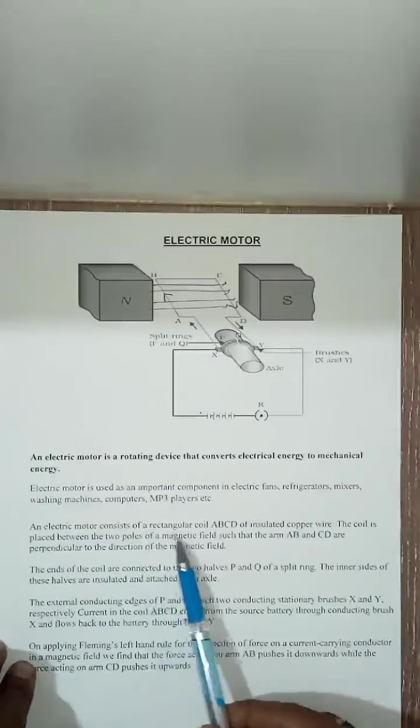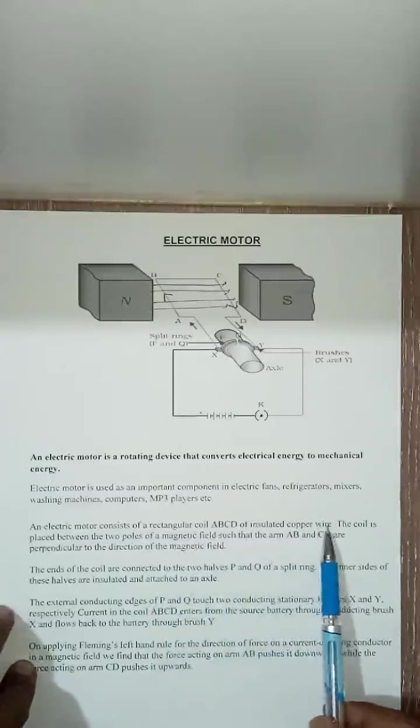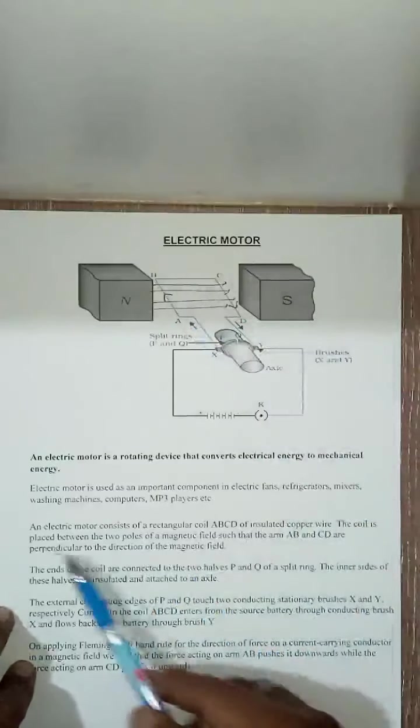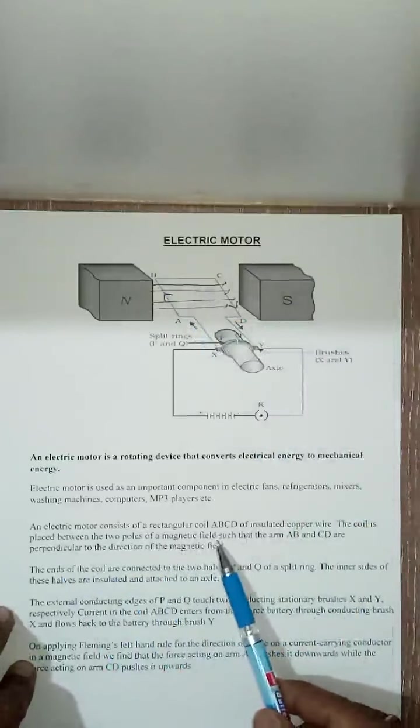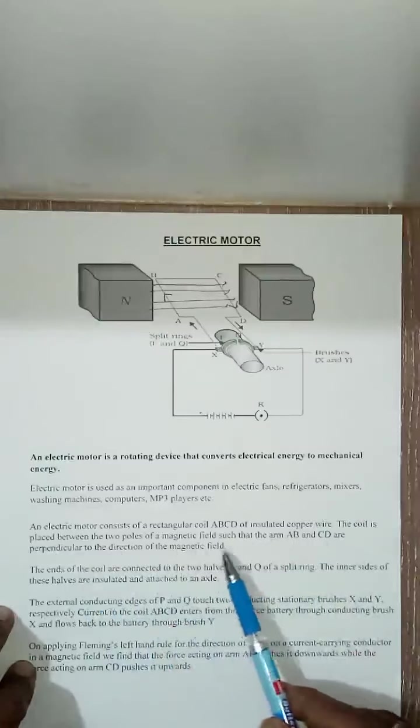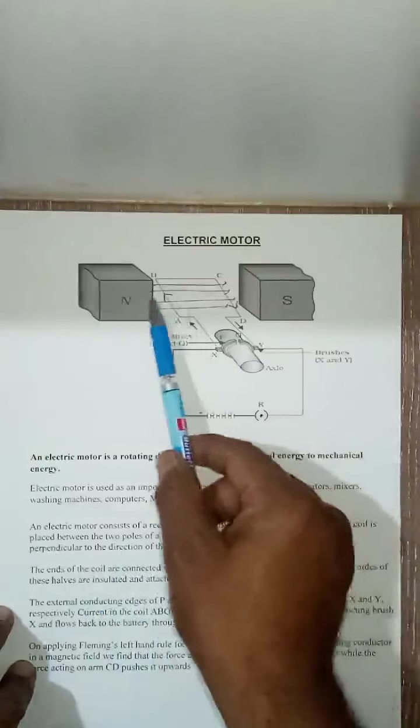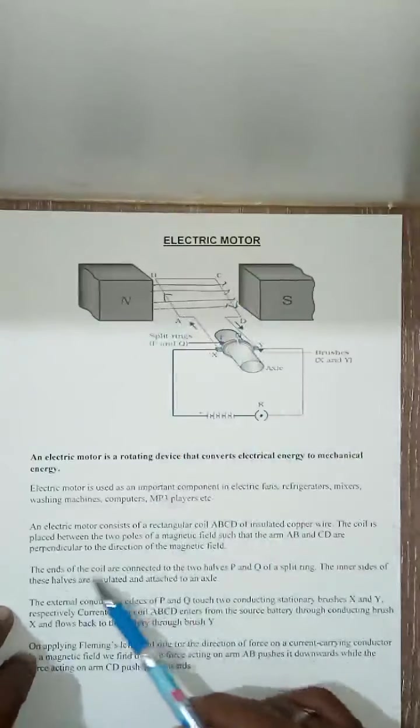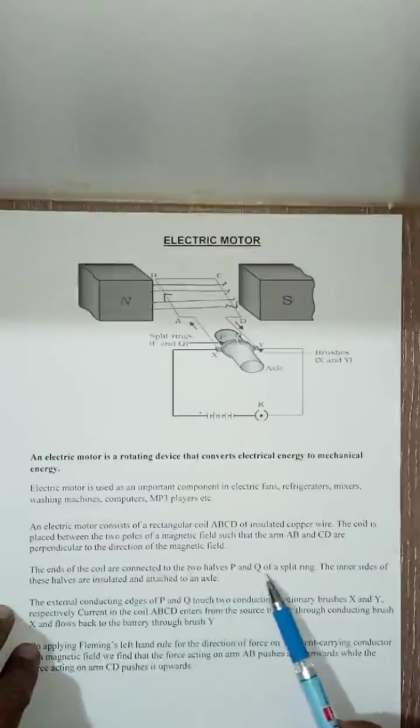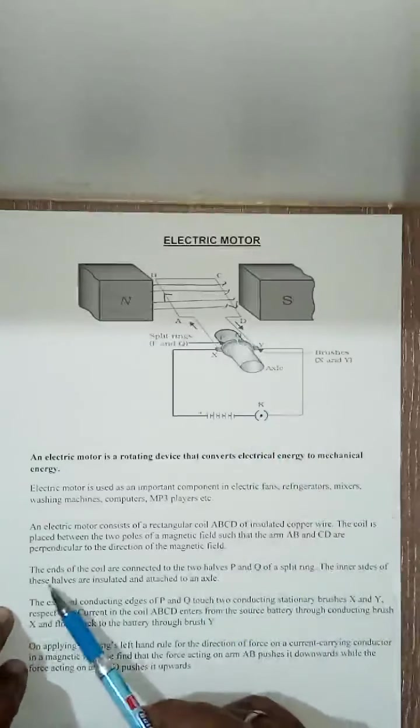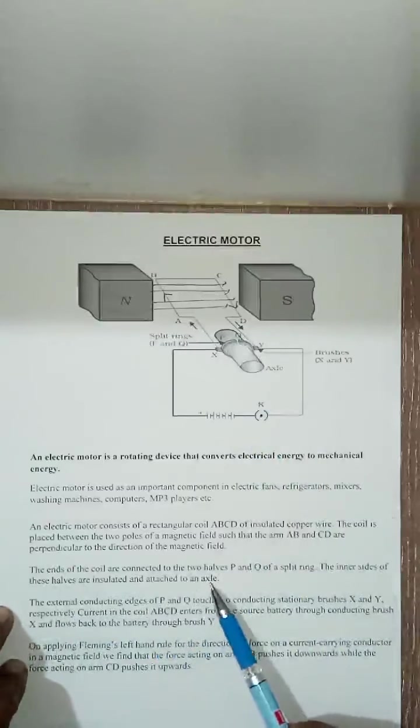An electric motor consists of a rectangular coil ABCD of copper wire as we have seen. The coil is placed between the two poles of magnetic field north and south such that the arm AB and CD are perpendicular to the direction of magnetic field. The ends of the coils are connected to the two halves P and Q of split rings. The inner sides of these halves are insulated and attached to an axle.